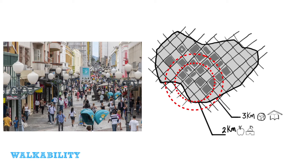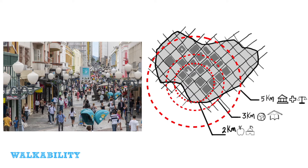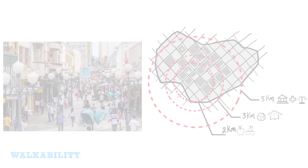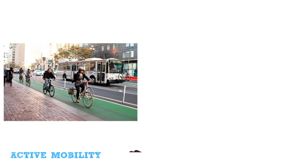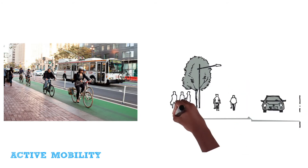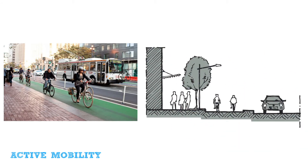Walkable streets are a key measure to reduce congestion and reliance on cars. Walkable vibrant streets combined with mixed-use, high-density and social mix make proximity to work, home and services possible. Street design should provide for pedestrians and cyclist lanes to reduce reliance on cars and reduce our carbon footprint.